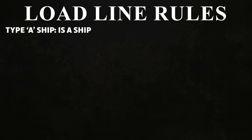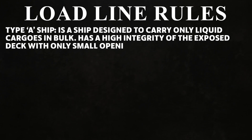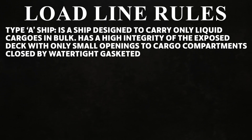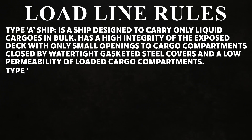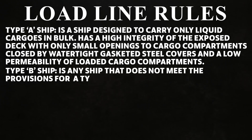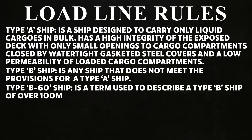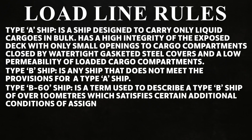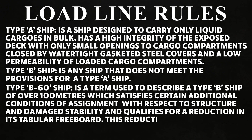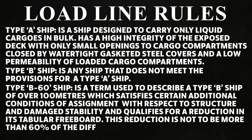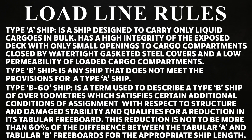Type A ship is designed to carry only liquid cargos in bulk, has high integrity of the exposed deck with only small openings to cargo compartments closed by watertight gasketed steel covers, and low permeability of loaded cargo compartments. Type B ship is any ship that does not meet the Type A provisions. Type B60 describes a Type B ship of over 100 meters which satisfies certain additional conditions of assignment and qualifies for a reduction in tabular freeboard not more than 60% of the difference between tabular A and B freeboards for the appropriate ship length.